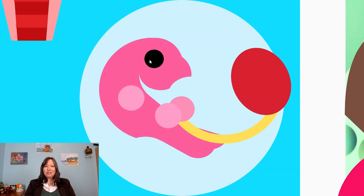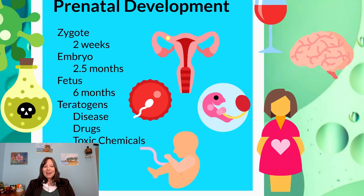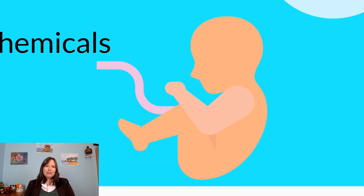Our eyes start off as just little black light sensors and eventually develop into more complicated organs. Our hands start off as just little nubs and then get larger. Eventually our tail disappears, and we look less lizard or tadpole-like. At the end of the stage of the embryo, we actually look quite human-like, and that's when we enter the stage of the fetus, which lasts about six months. At this point we tend to look pretty human-like.